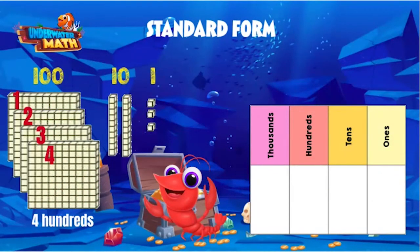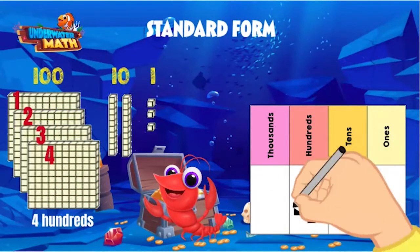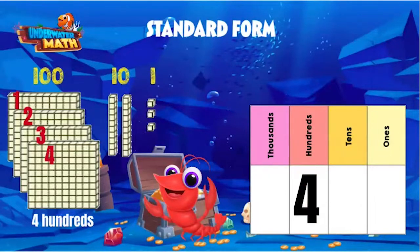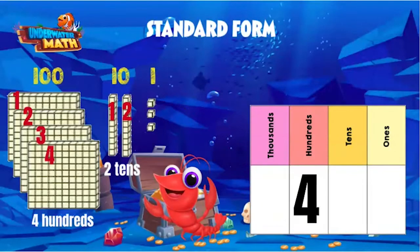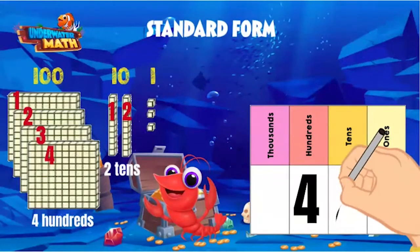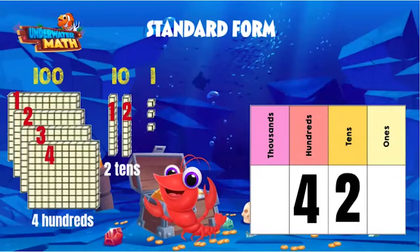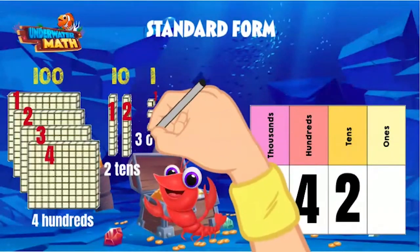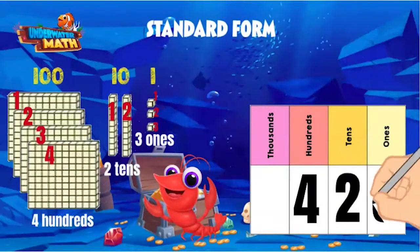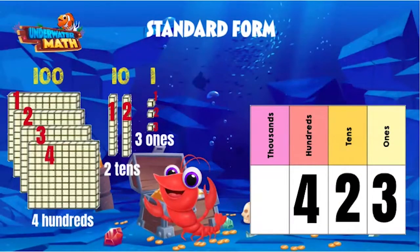What is the value of 400? 400. How many tens do we have? 1 ten, 2 tens. What is the value of two tens? You got it — 20. And let's count the ones: one, two, three. Three ones.